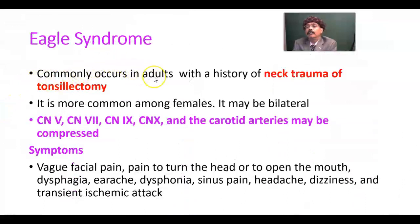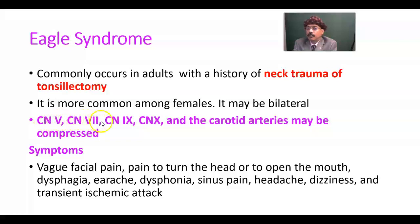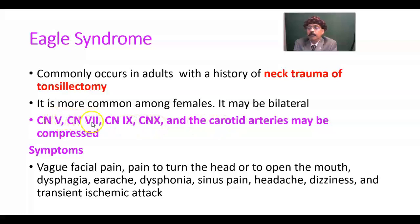Eagle syndrome commonly occurs in adults, usually after the age of 40, with a history of neck trauma, neck injury, or surgery such as tonsillectomy — the removal of the palatine tonsils from the oropharynx. It is more common among females and may be bilateral. The trigeminal nerve (5th cranial nerve), facial nerve (7th), glossopharyngeal nerve (9th), and vagus nerve (10th) may be impinged or compressed, as may the external or internal carotid artery.